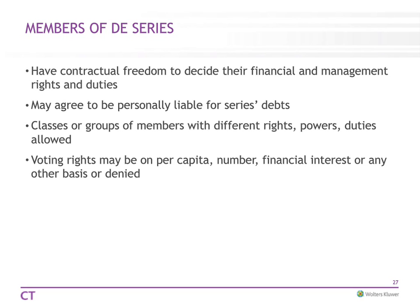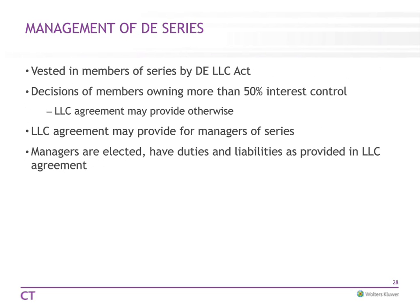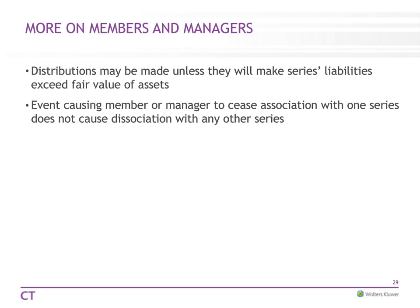Management of the series is not really that different from regular Delaware LLC managerial requirements. Distributions can be made unless they will make the series liabilities exceed the fair value of assets — you can't bankrupt a series just to pay distributions. Any event that would cause a member or manager to cease association would not cause dissociation with any other series. You can have a member or manager leave a series, or have the series itself dissolved, with no impact on the other series.